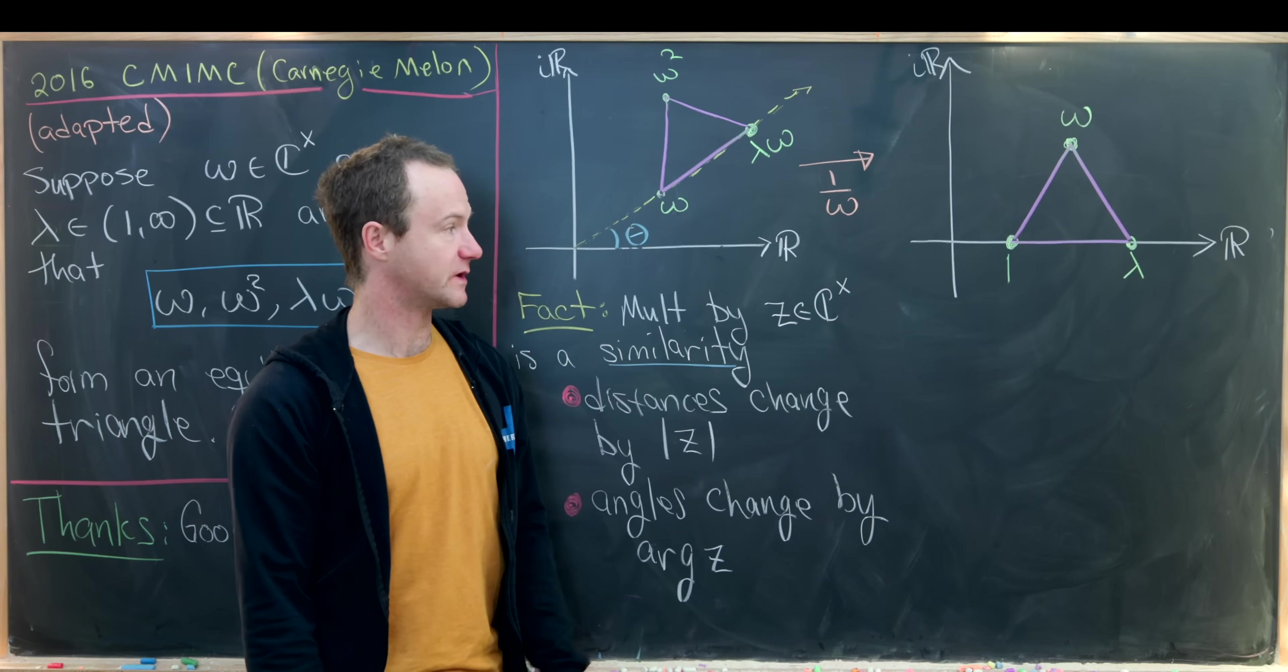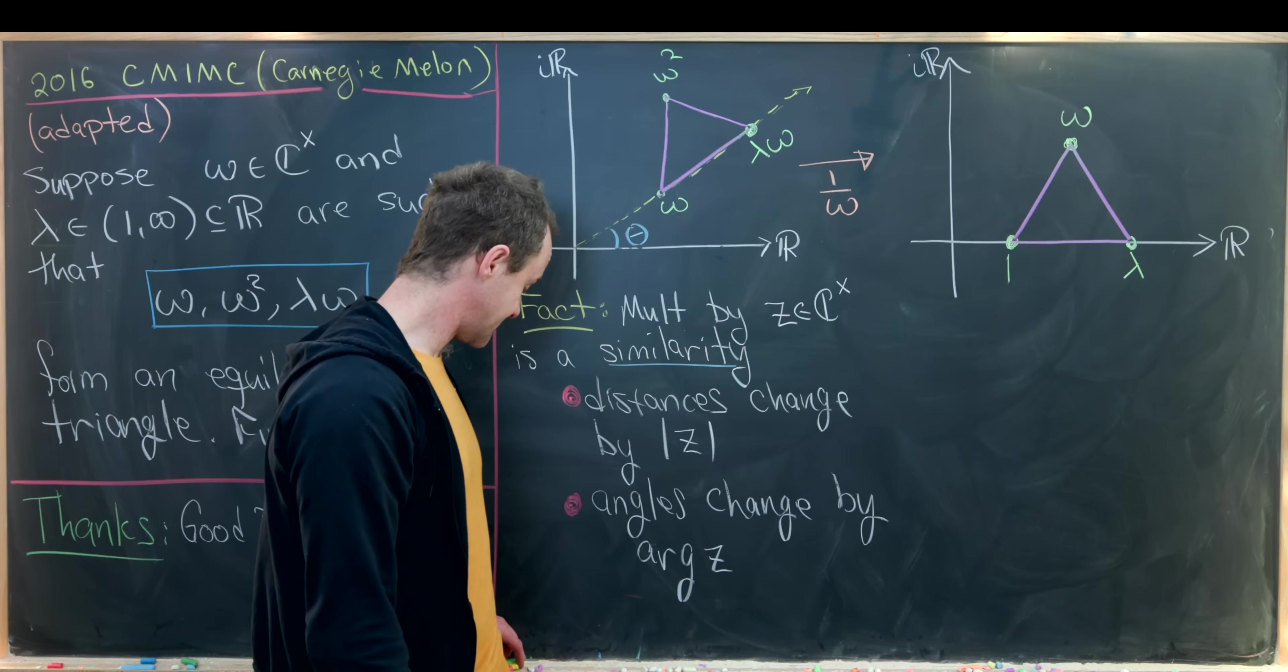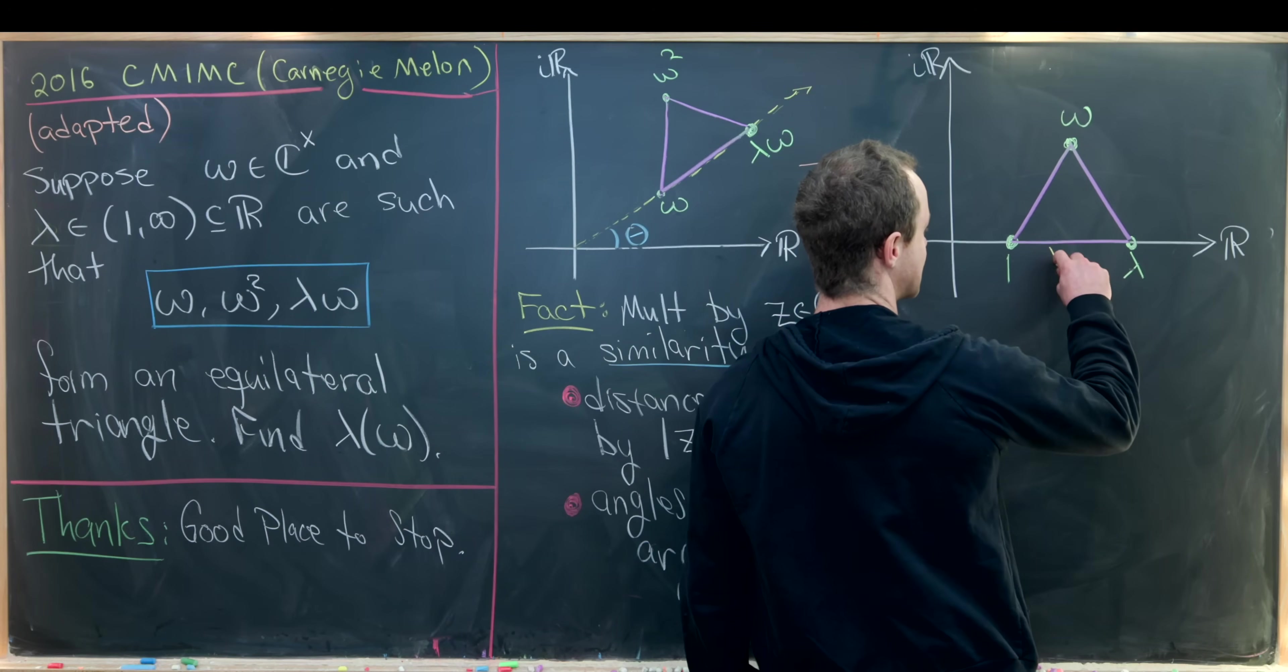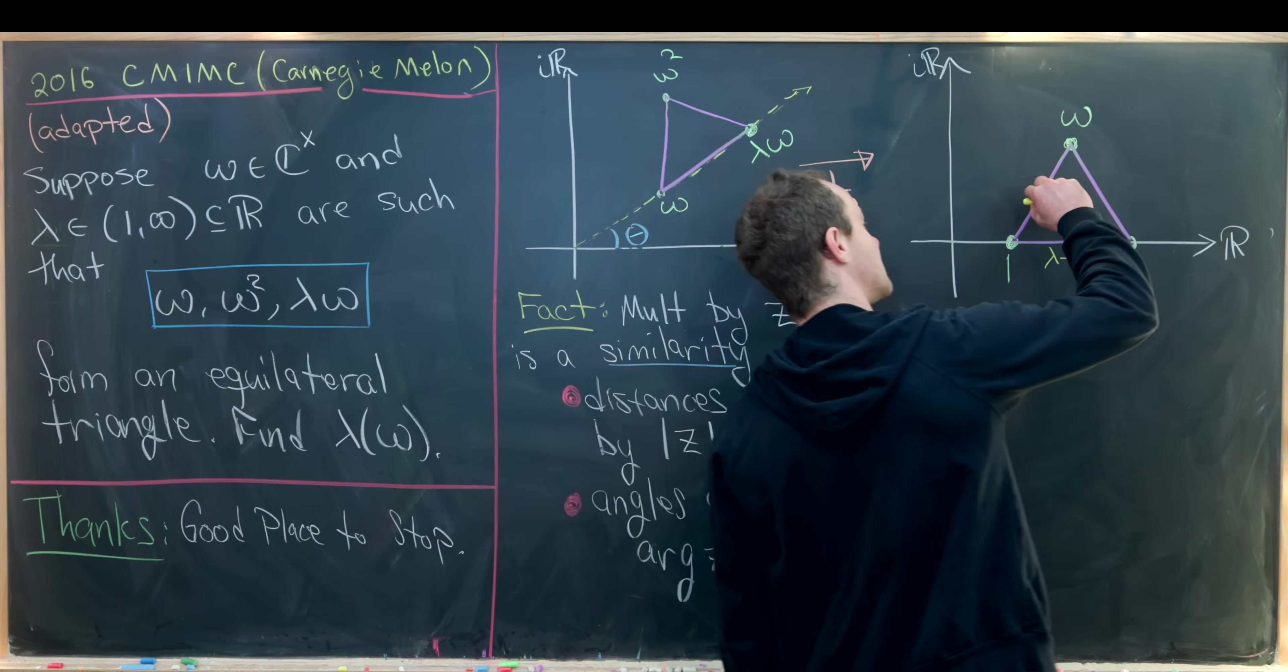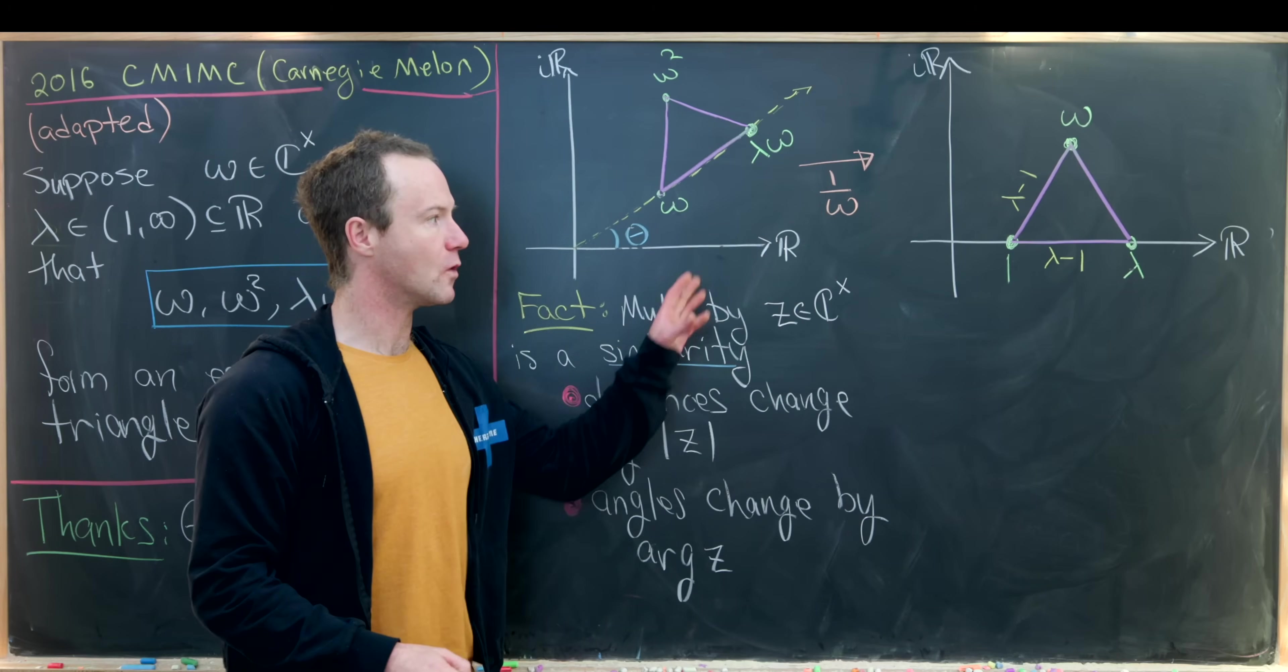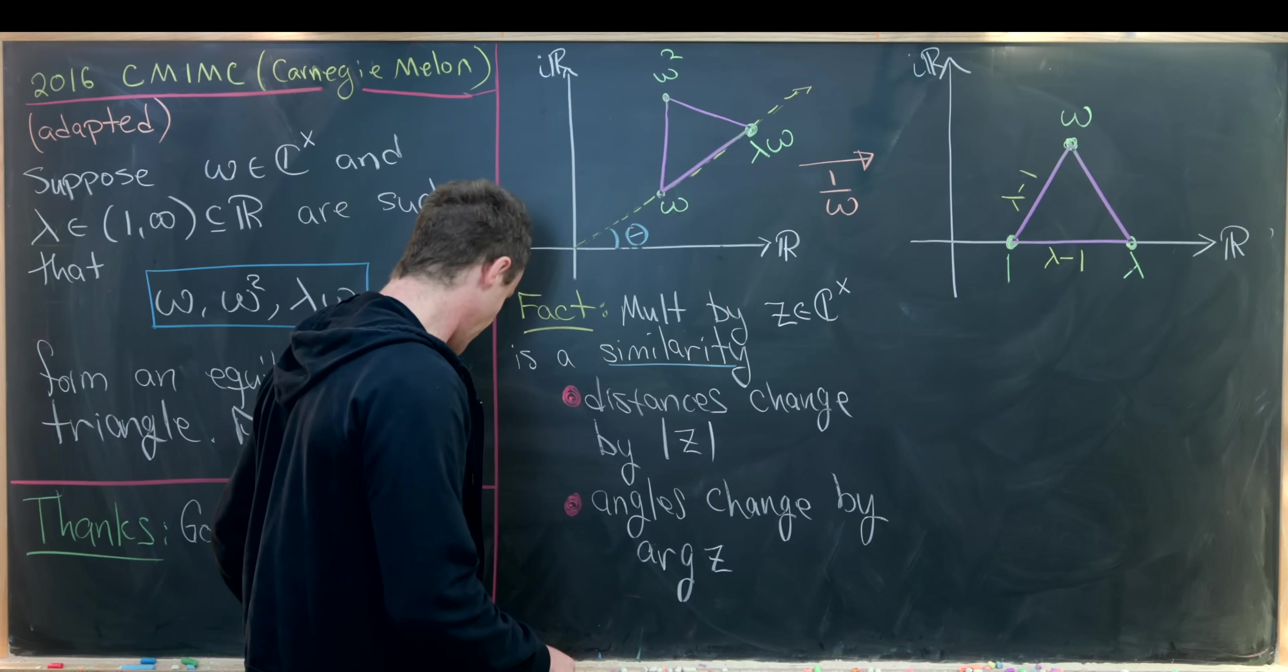Okay, so we end up with the following triangle, which is nice now because it lives on this real axis. And since it lives on this real axis, we can talk about the measurement of these sides pretty easily. So notice the distance from 1 to lambda will be lambda minus 1. And then since this is an equilateral triangle, all of these distances will also be lambda minus 1. So I'll just put one more in there. But this one right here is also lambda minus 1 or has length lambda minus 1.